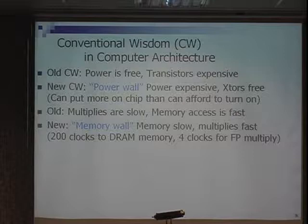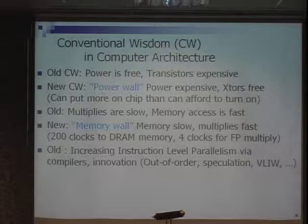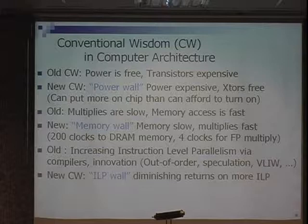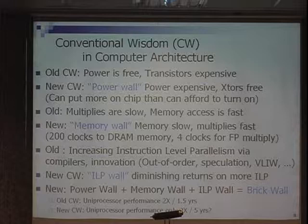For 15 years we doubled performance every 18 months. How? It wasn't just the people at Intel figuring out how to build transistors. Moore's Law gave us more transistors, and we came up with innovations to take advantage of that — called instruction-level parallelism. Well, we're at an ILP wall. We've pretty much run out of ideas. Anything even more exotic than what's been done gives very little return on that investment. So memory wall plus power wall plus ILP wall means brick wall.